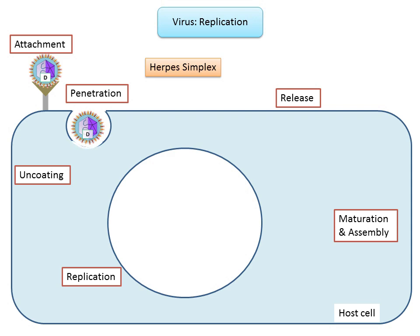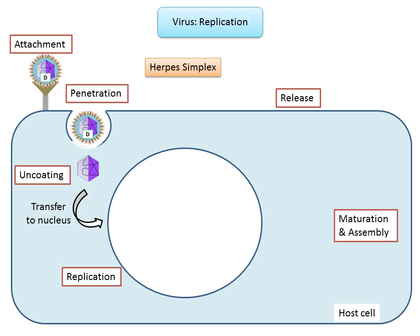Following entry into the host cell, the viral capsid is removed and degraded by viral or host enzymes, releasing the viral genomic nucleic acid. The capsid enters the nucleus of the host cell. After the viral genome has been uncoated, transcription or translation of the viral genome is initiated. This stage of viral replication differs greatly between DNA and RNA viruses.